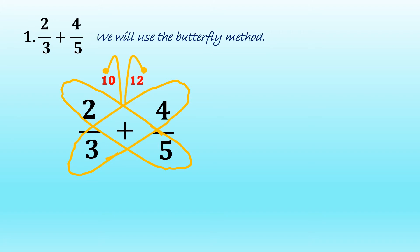Then we will draw the antenna and the tail of our butterfly. We multiply three and five, so we have now our butterfly. Writing formally, we can have ten plus twelve over fifteen is equal to twenty-two over fifteen.